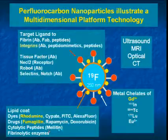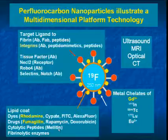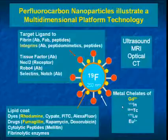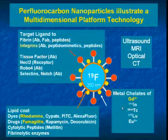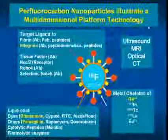We call those the nano-Bs. And we have a variety of chelates that we use for different purposes: gadolinium for MR, indium for nuclear cores, europium for PARACEST, and these agents are used for virtually all modalities.